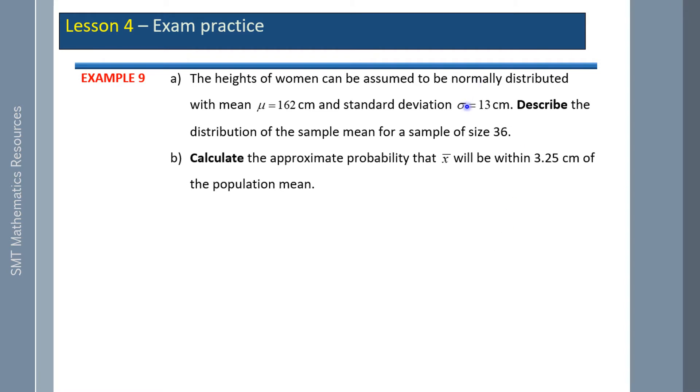In this case, sigma population standard deviation is known. First, we're going to assume that the sample mean is approximately equivalent to the population mean, which is 162 centimeters. Work out the sample standard deviation: sigma is known is 13 over the square root of 36, which is 2.167.